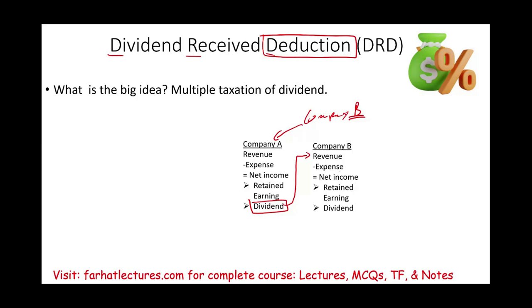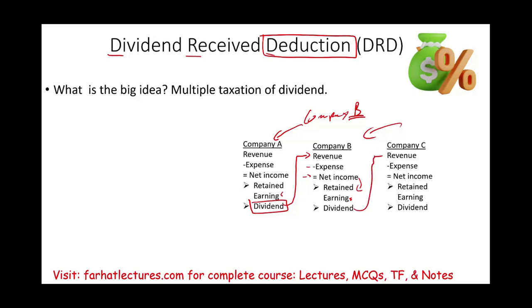Company B would receive this dividend and include it with their revenue. We're dealing here with a C corporation. Then they reduce their expenses, get to net income, put it in retained earnings first, and then they might pay out a dividend. Company B might be owned — some of their shares — by Company C. If they pay a dividend, this dividend goes to the revenue of Company C. Company C will incur expenses, have net income, that net income would sit in retained earnings, and it will be paid out in dividend.